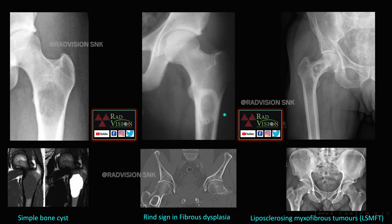Sometimes there is a lytic lesion with ground glass opacity associated with a thick sclerotic rim — this picture is classically seen in the proximal femur and is called the rind sign, classically seen in fibrous dysplasia. Another similar imaging appearance is seen in liposlerosing myxofibrous tumor (LSMFT), which typically involves the intertrochanteric region with lytic areas, some calcified components, and associated sclerosis. Note that LSMFT is now reclassified as fibrous dysplasia in the 5th edition WHO tumor classification.